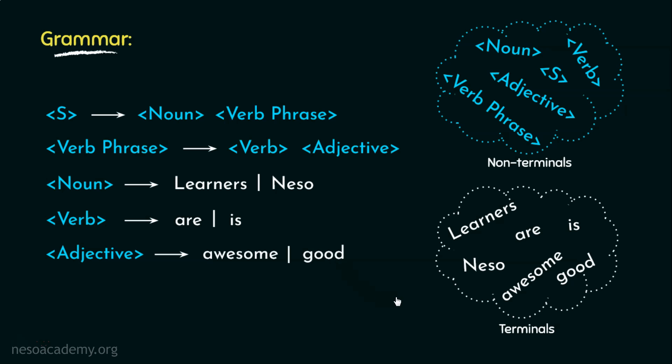Now, if our vocabulary is restricted to learners, neso, is, are, awesome, and good words, that is these words only, and our sentences are only of the form noun followed by verb phrase, and verb phrase is verb followed by adjective, then we can describe the formal grammar using four tuples: N, T, P, and S.